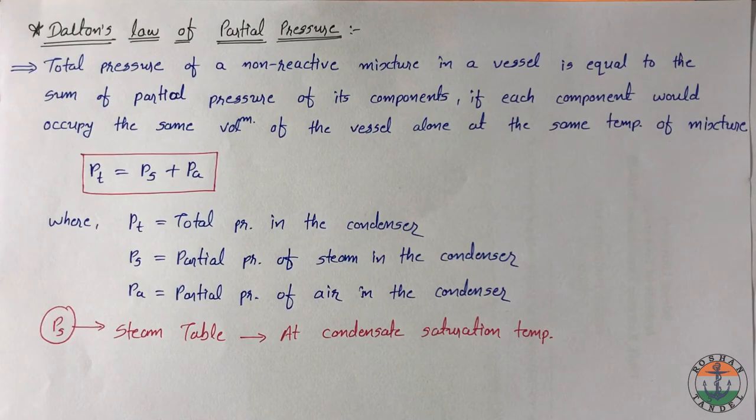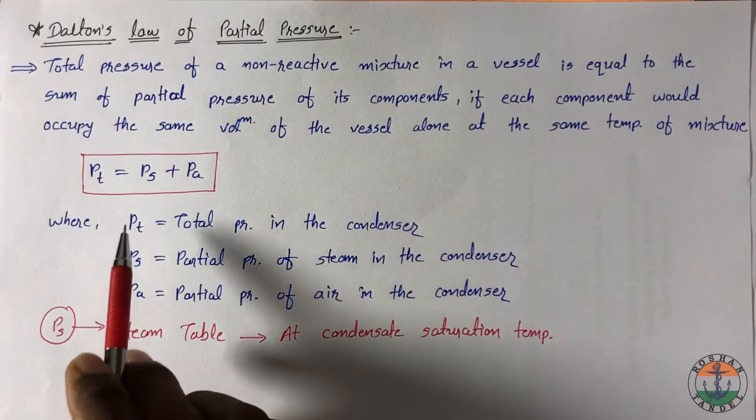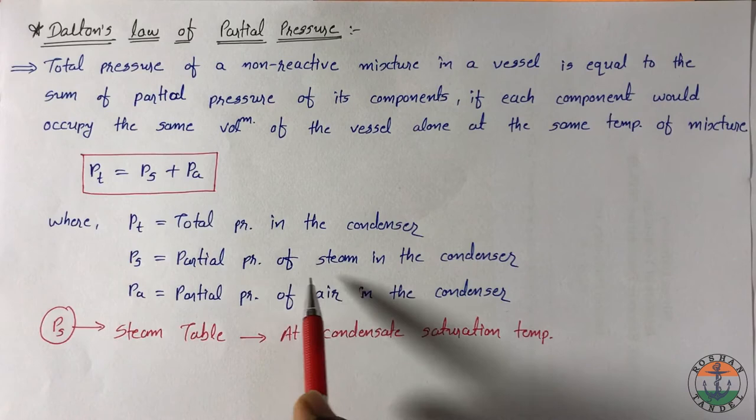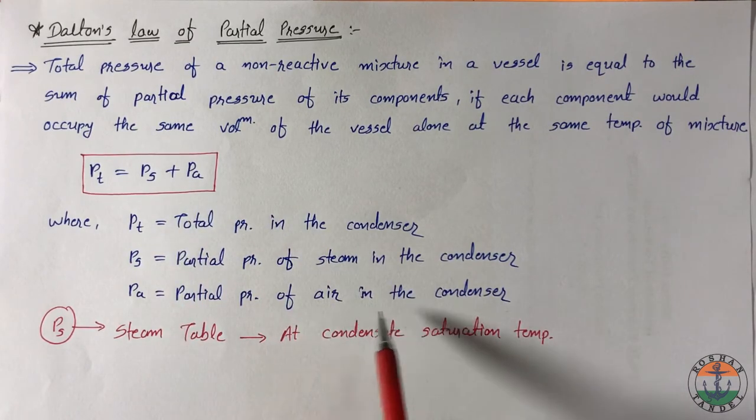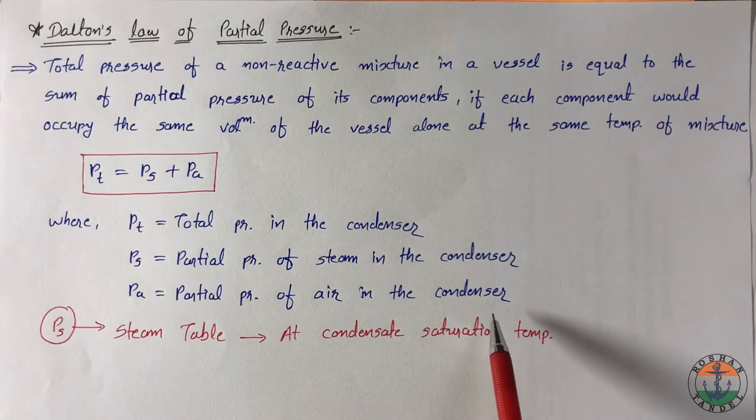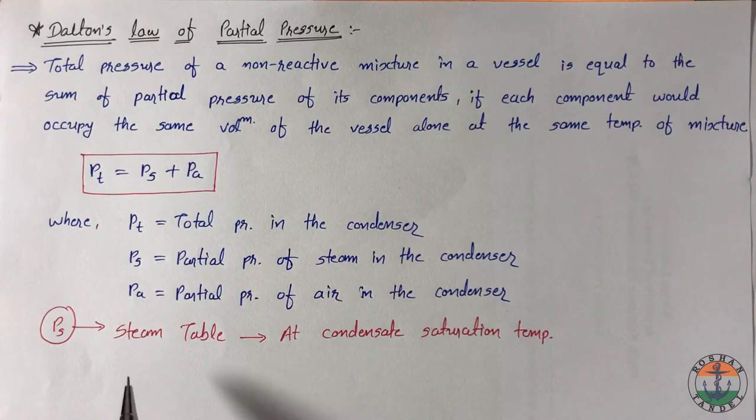Here in the condenser, some air is also present with the steam. So absolute pressure in the condenser is considered as total pressure in the condenser which is the sum of partial pressure of steam plus partial pressure of air present in the condenser. Here partial pressure of steam we can calculate from the steam table at condensate saturation temperature.